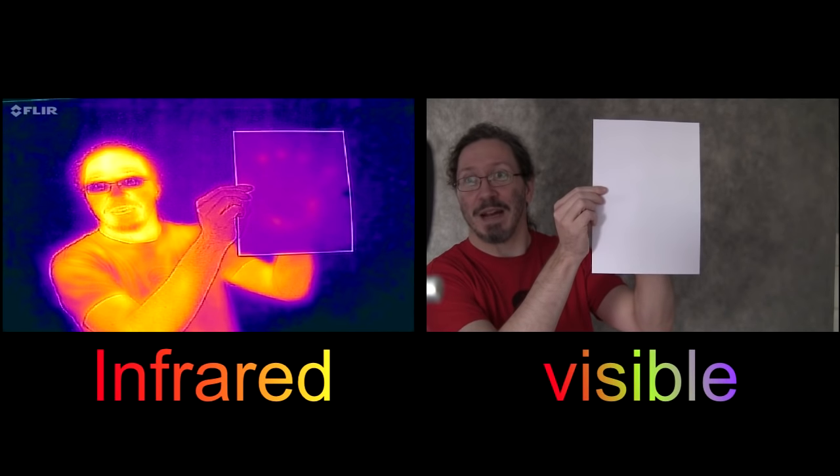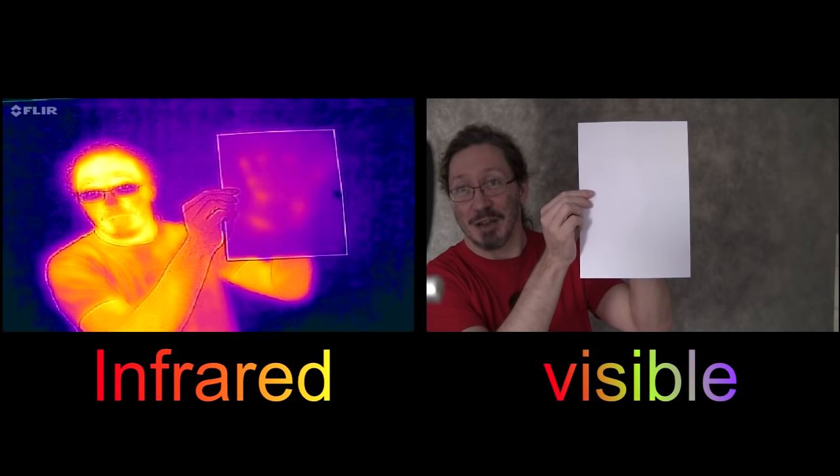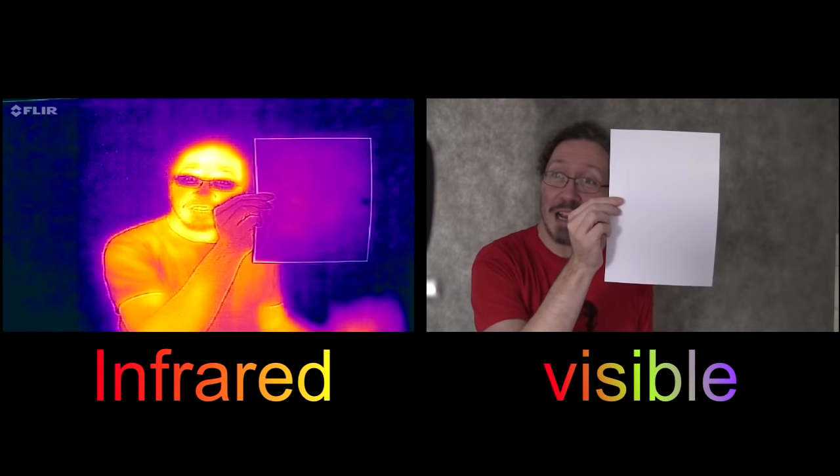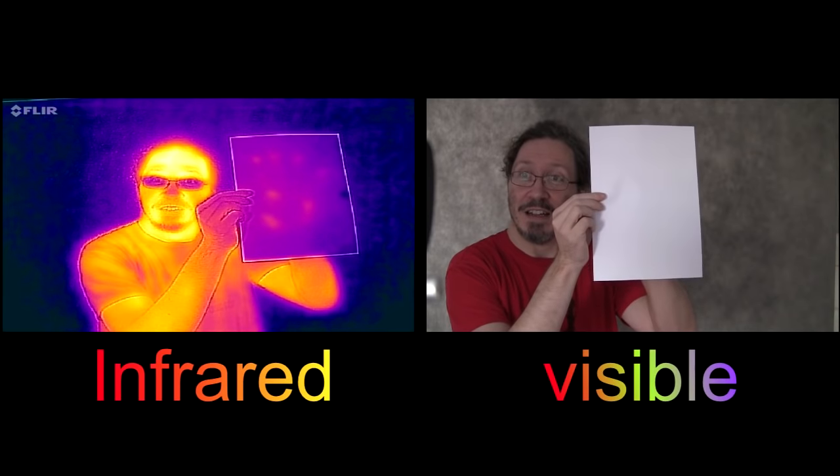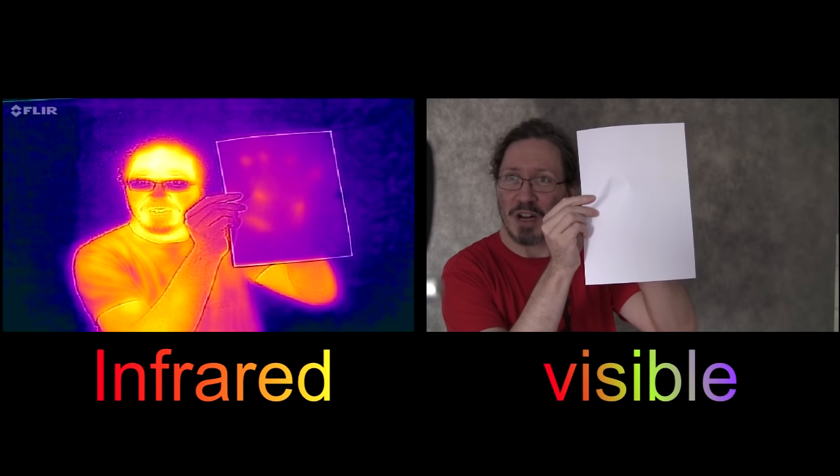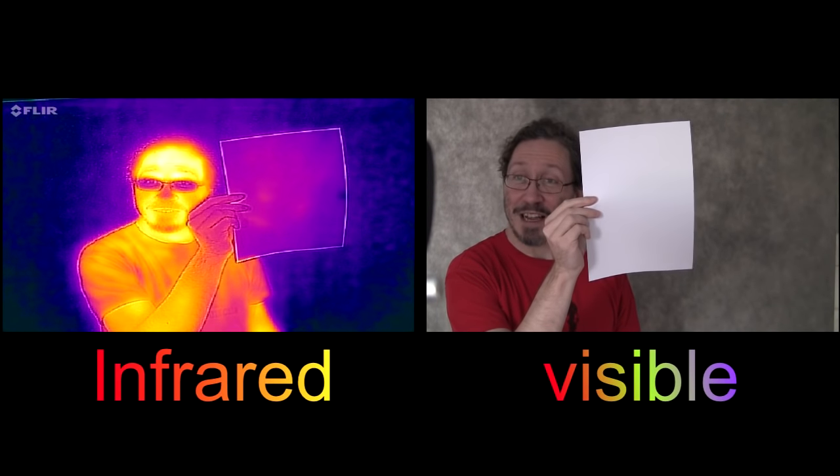If I touch the back of this paper, what you'll see is very quickly it adopts the temperature of my hand. So even though you can't see where my hand's been on this piece of paper in the visible, in the infrared, especially if I push it hard or a little harder, you can see the handprint.